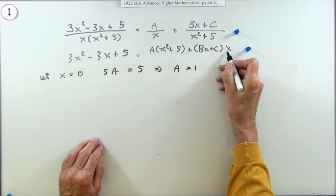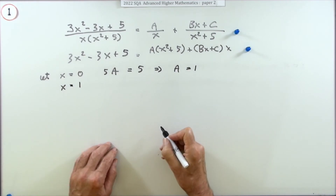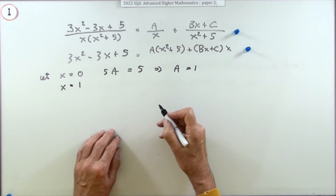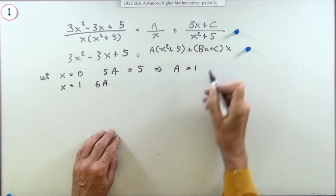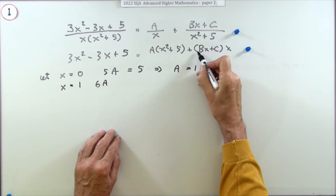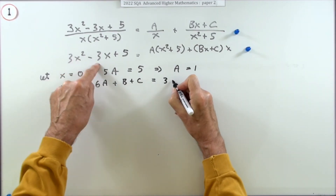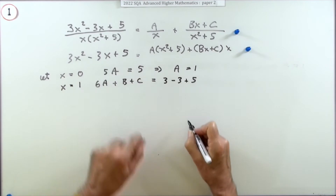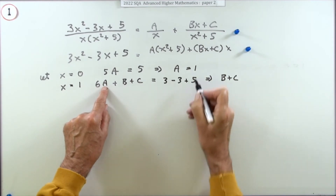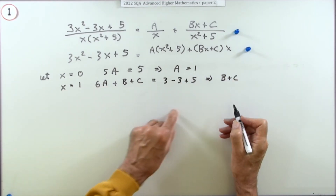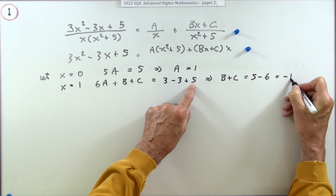That's the only convenient knockout value, so to minimize arithmetic use the smallest possible numbers. If x equals 1: the left side gives 6A, and the right side gives A·(1·(1+5)) = 6A. The x terms give b plus c. Putting in the numbers: 3 minus 3 plus 5 equals 5. Since A is 1, that's 6, so b plus c equals 5 minus 6, which is negative 1.